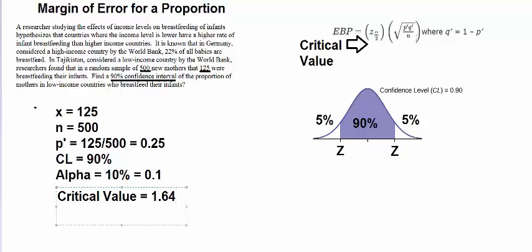We know n, I know p prime or p hat. I also need to know q hat, the complement of our sample proportion. So that's going to be 1 minus 0.25, which is 0.75.